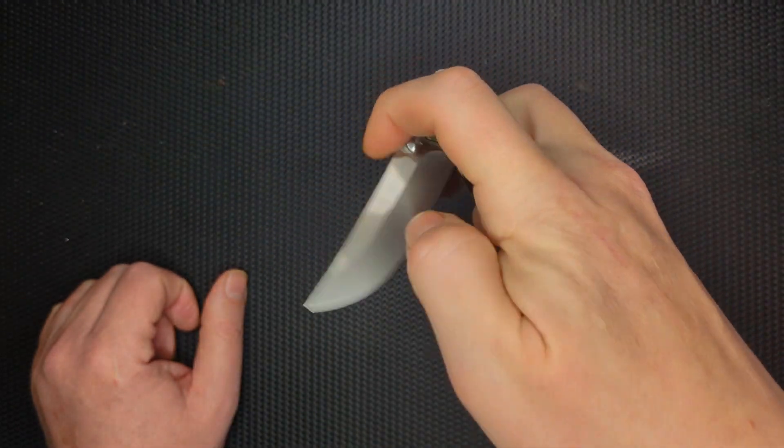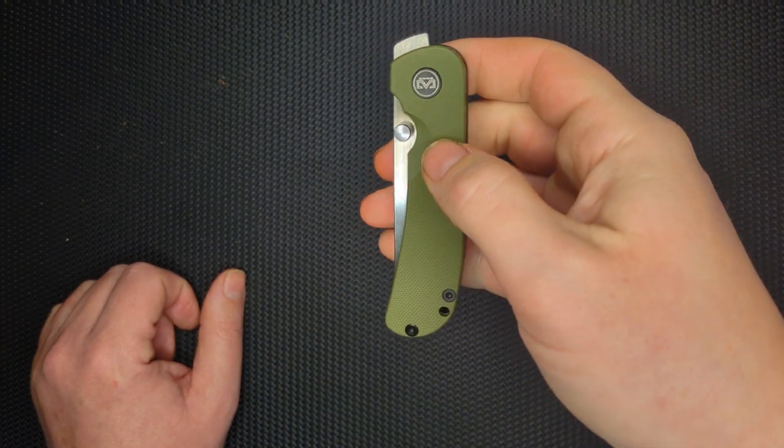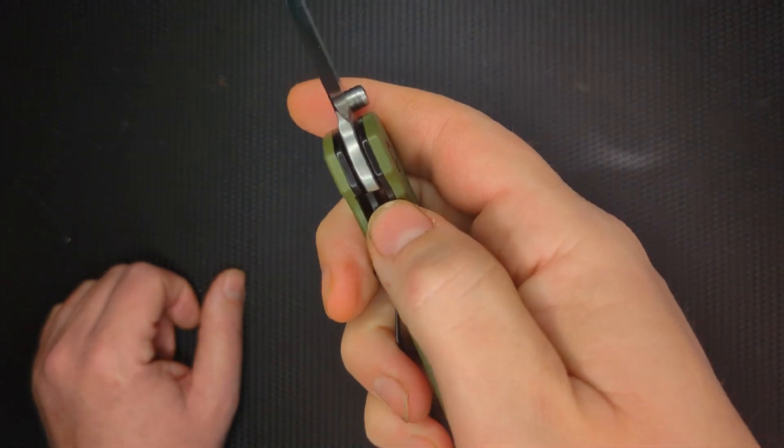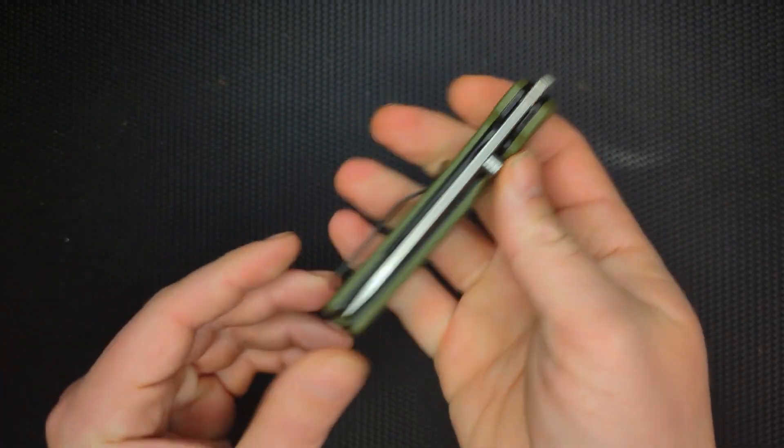I'm not good at front flipping, and I thought I wouldn't like this knife because of the front flipper. But because it has such easy access to the thumb stud and flicks out so nicely, and the lockup is so good and it's totally centered, it just is awesome. And it's pretty light in the pocket too.